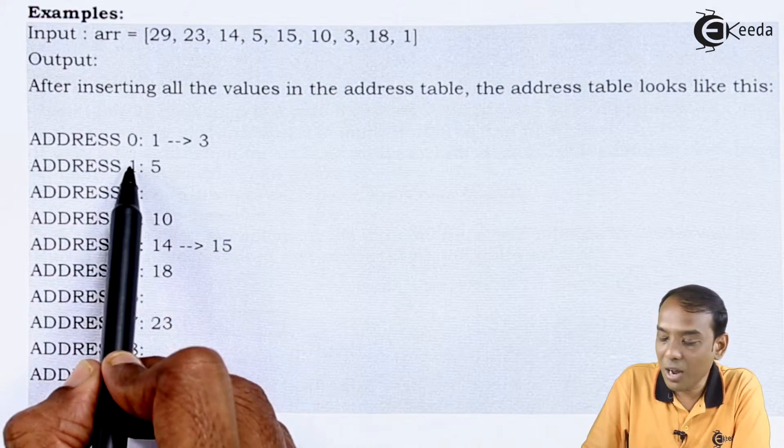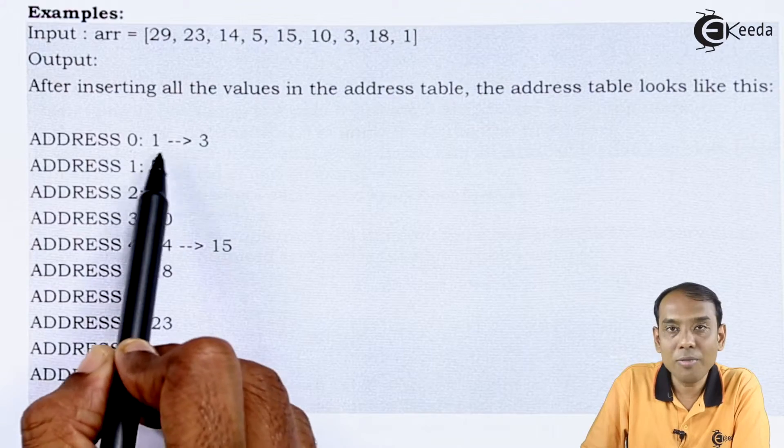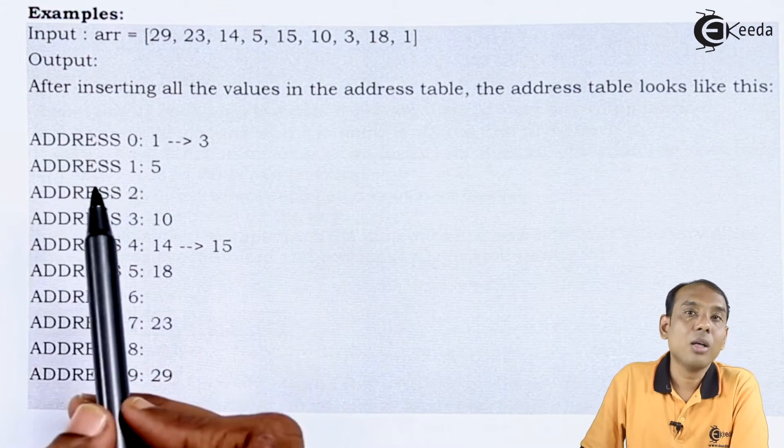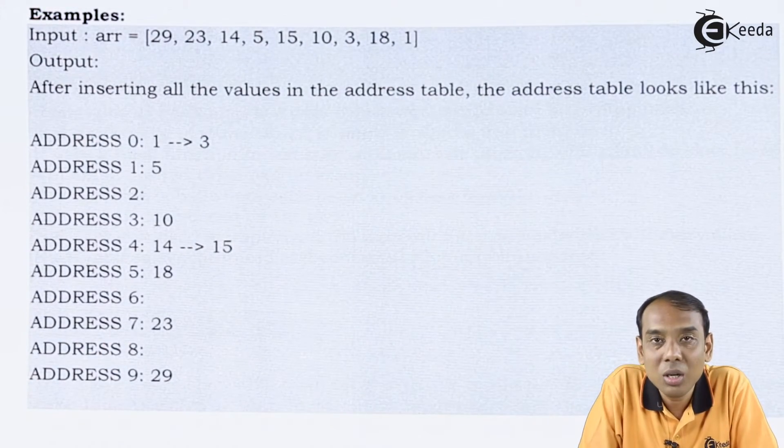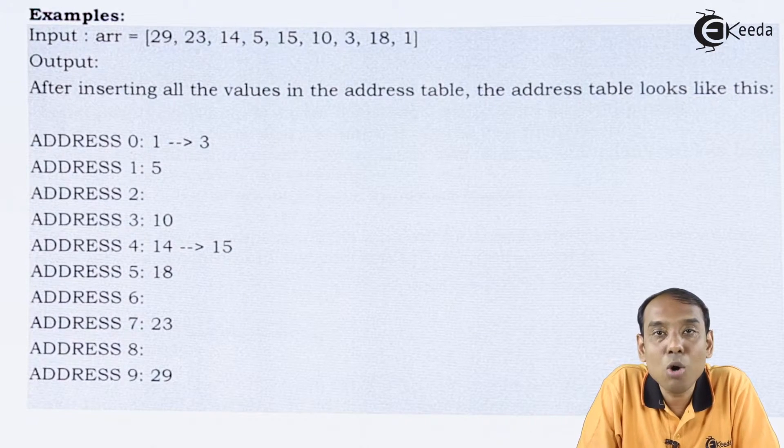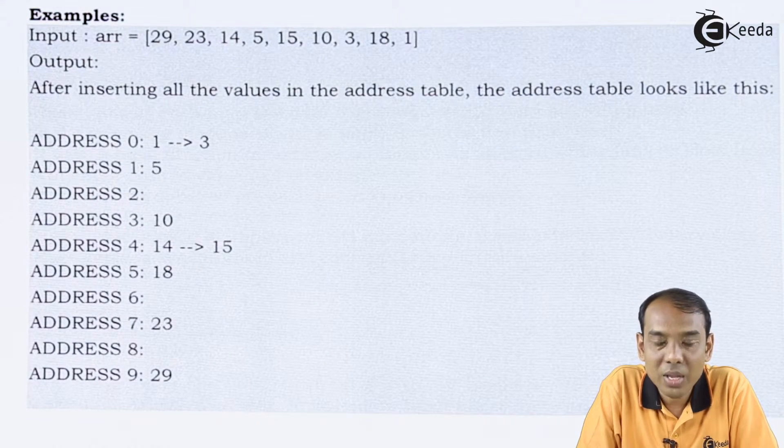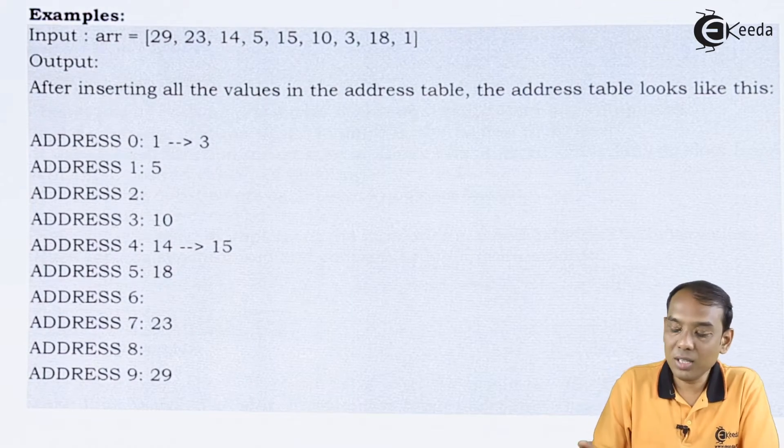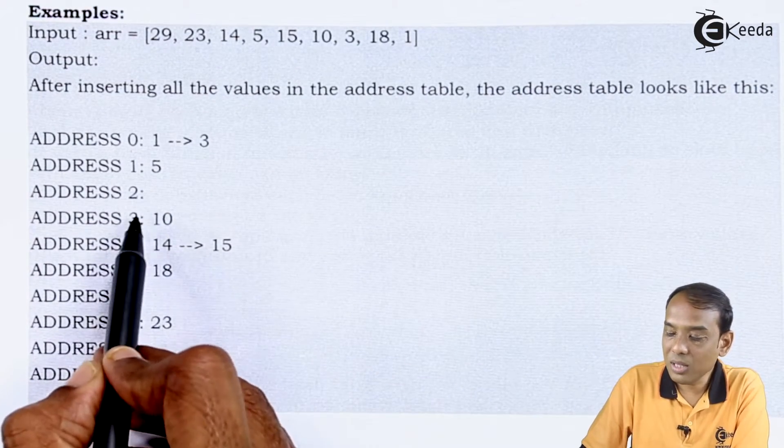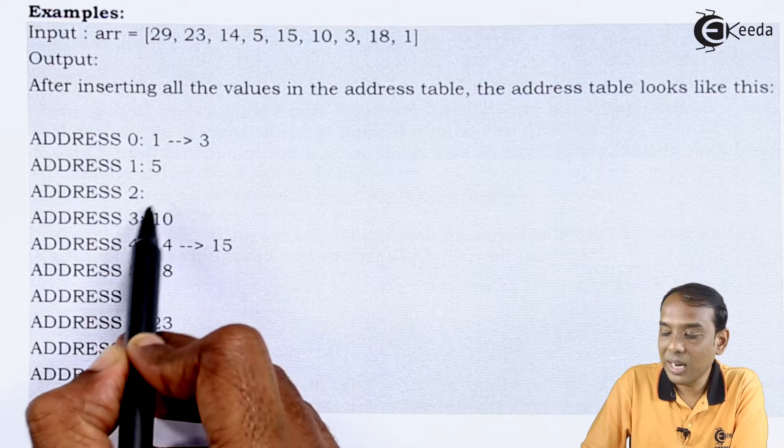In address number 1, I have direct access to value of 5. But since I have used the hash function due to which there are no values stored at the address number 2, so address number 2 is null. Then I move to the next address. That is your address number 3. In this I am going to store the value called as 10.